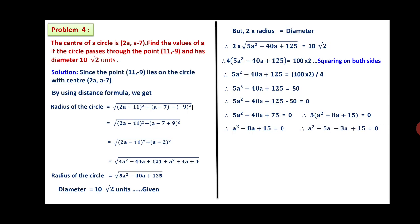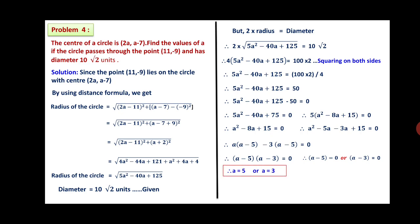Factorizing a² - 8a + 15 = 0: the factors are (a - 5)(a - 3) = 0, giving a - 3 = 0 or a - 5 = 0. Therefore a = 3 or a = 5. The values of a are 3 and 5.